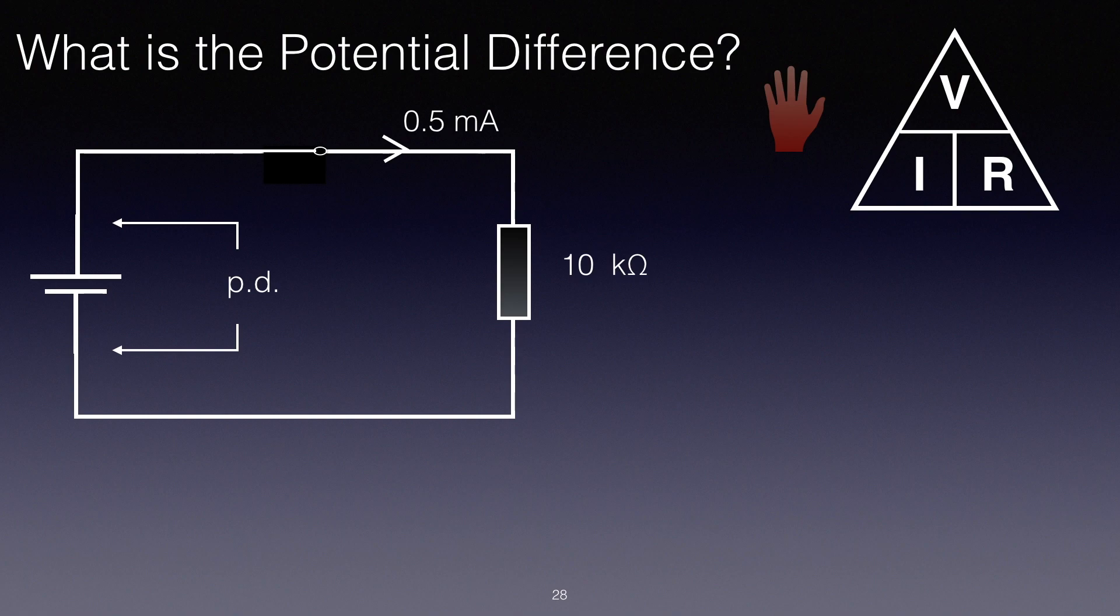On this one we're saying, what is the potential difference or the voltage across the battery? The words potential difference and voltage in this case are interchangeable. The potential difference means the difference in potential between the two terminals of the battery. We know that there is 0.5 milliamps flowing around the circuit, and we know that there are 10 kilo ohms. So let's use the hand to cover up V. We don't know what V is. It's IR. So the formula is V equals IR.